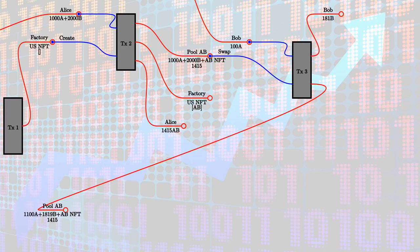Now that the liquidity pool has been set up, other users can use it to swap. Bob wants to swap 100 A against B. He creates a transaction with two inputs — the 100 A and the pool with the swap redeemer — and two outputs: the B's he gets in return (181 B's in this example) and the updated pool. The pool now has 1100 A and 1819 B, and the datum hasn't changed because the amount of liquidity tokens minted hasn't changed.